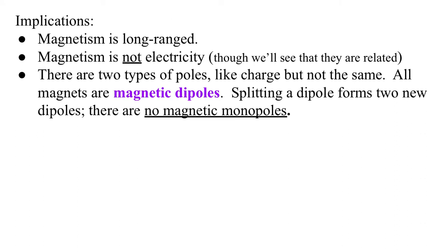Here are some implications. One, magnetism is long-ranged. You don't have to have things touching, they can just be near each other. Two, magnetism is not electricity, although later we'll see that they are related.